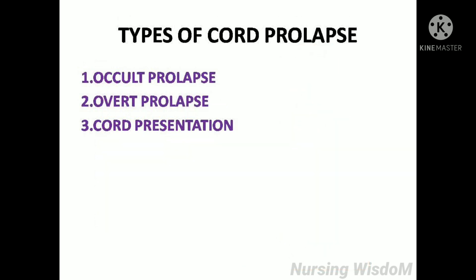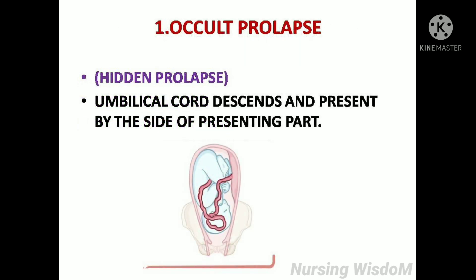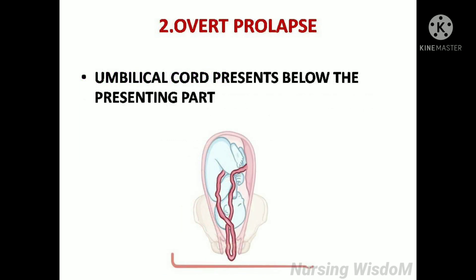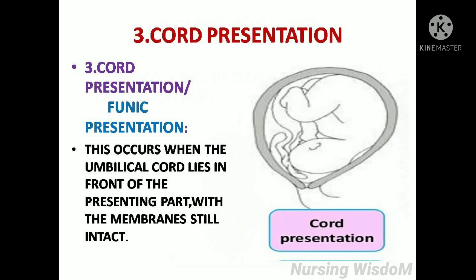There are three types of cord prolapse: occult prolapse, overt prolapse, and cord presentation. Occult prolapse, otherwise called hidden prolapse, is where the umbilical cord descends and presents by the side of the presenting part. Overt prolapse is where the umbilical cord presents below the presenting part. Cord presentation, otherwise called funic presentation, occurs when the umbilical cord lies in front of the presenting part with the membranes still intact.